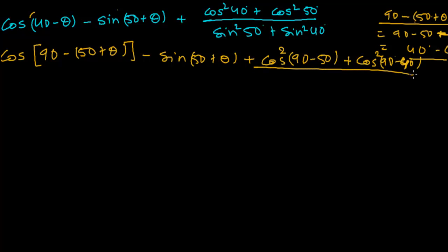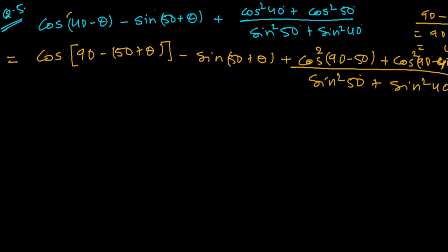The denominator is sin squared 50 plus sin squared 40. We have now changed cos(40 minus theta), cos squared 40, and cos squared 50 into their corresponding forms. In the next step these will be converted into sin form.